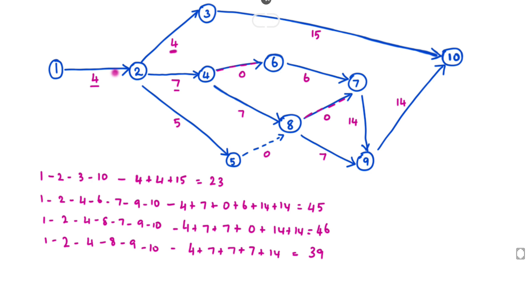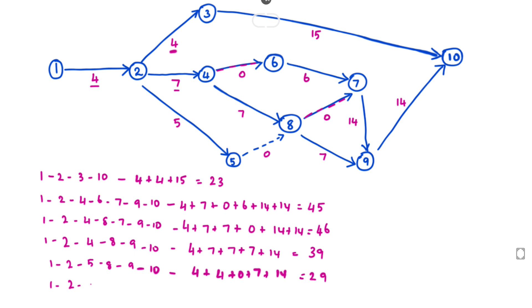Next path is 1-2-5-8-9-10. The value will be 4 plus 4 plus 0 plus 7 plus 14, so the total duration will be 29. The next path is 1-2-5-8-7-9-10. The duration will be 4 plus 4 plus 4 plus 0 plus 0 plus 14 plus 14, equal to 36.